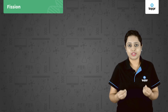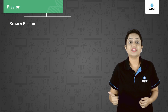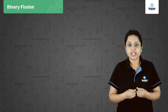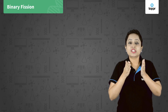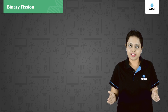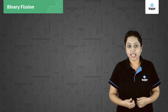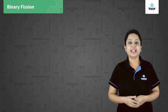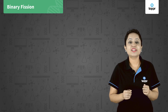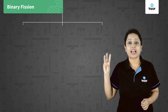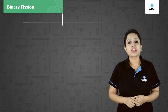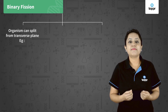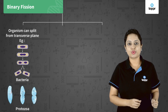There are two types of fission: first, binary fission; second, multiple fission. In binary fission, the organism divides or splits into two parts — for example, it occurs in bacteria, amoeba, paramecium, etc. Depending on the plane of cell division, binary fission can be of three types. First, the organism can split from a transverse plane — for example, in bacteria and protozoa. Second, organisms can split from any plane — for example, in amoeba.